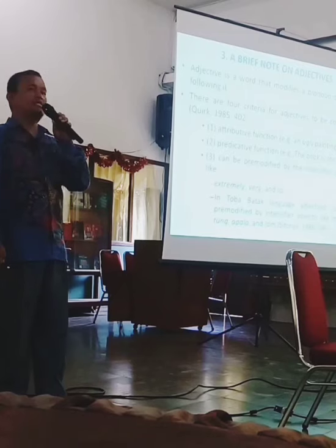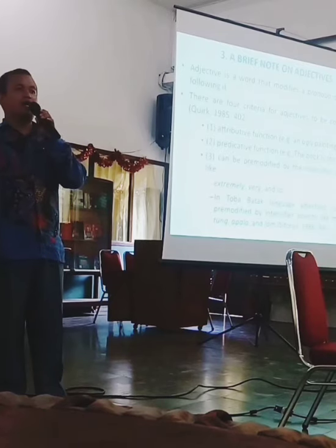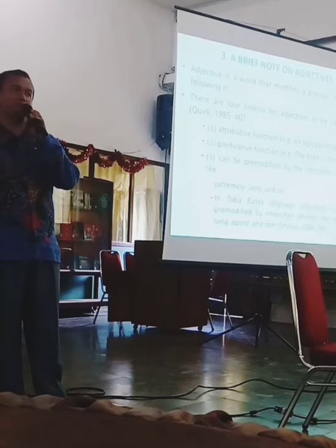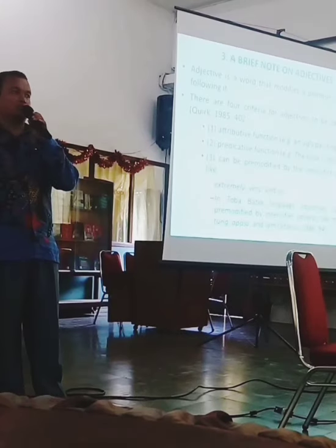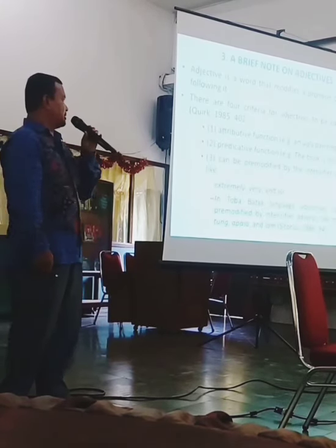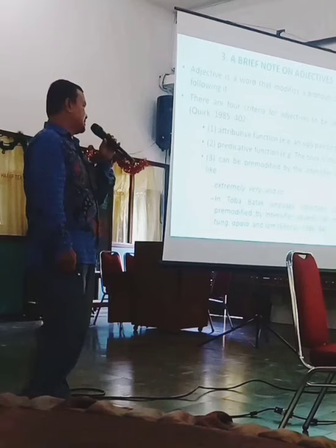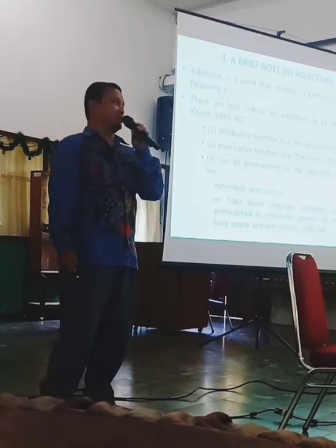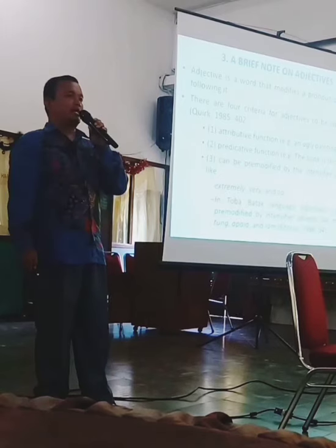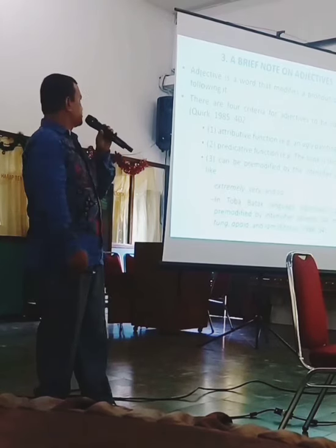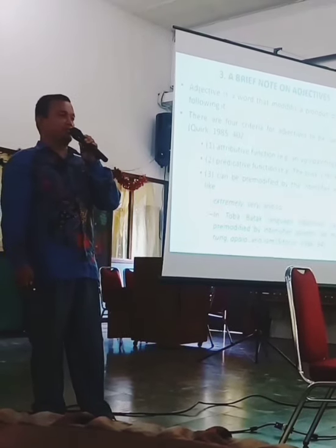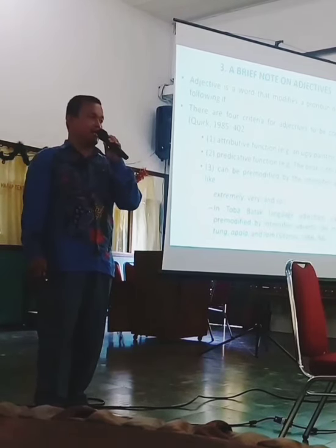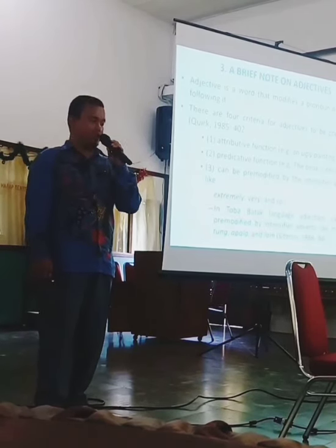The first is that an adjective has an attributive function. Attributive means to signal or to indicate something, like in the phrase 'an ugly pattern' — 'ugly' is attributive. The next criterion is the predicative function, like 'the book is thick' or 'the lady is beautiful,' for example.